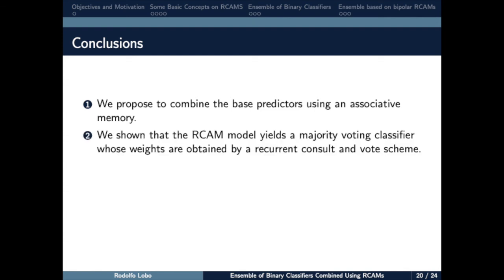We've shown that the RCAM model yields a majority voting classifier, whose weights are obtained by a recurrent consult and vote scheme. We observe that similar computational effort between the known models and the RCAM ensemble. The major burden is the grid search technique.